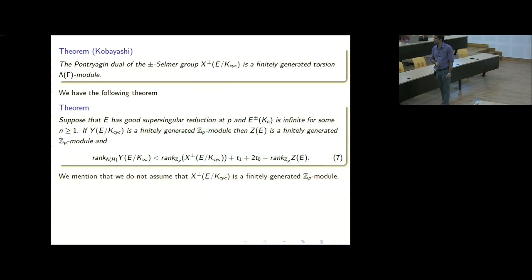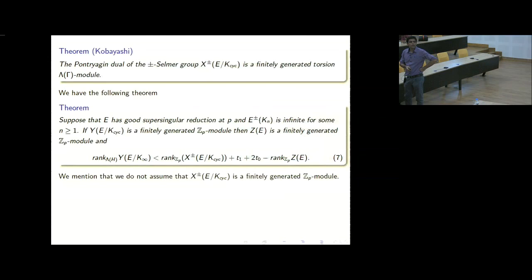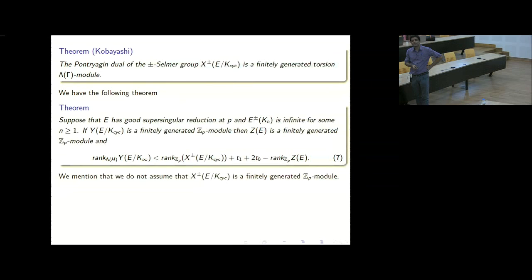We are not requiring the Selmer group to be a finitely generated Z_P module here; we just require the dual fine Selmer to be a finitely generated Z_P module. The statement is: if E^+(K_n) is infinite, then use the plus version; if E^-(K_n) is infinite, use the minus version. There are two statements. If the Mordell-Weil rank is positive, one can show that one of E^+ or E^- will have positive corank — since they together generate the whole group — and then for that corresponding sign, the theorem applies.